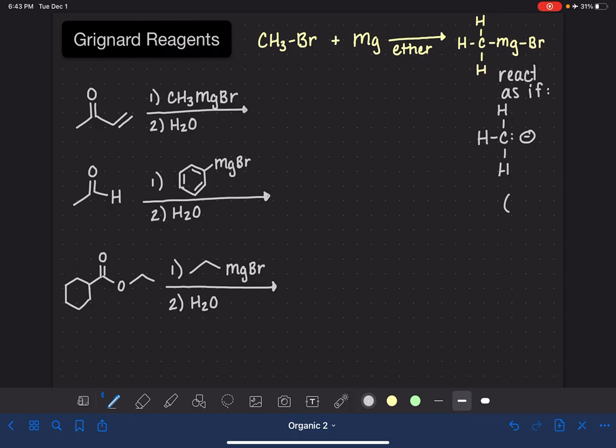They react a lot like a hydride ion, like we have seen in previous videos, lithium-aluminum hydride and sodium borohydride. In this video, I'm going to show you three different examples of Grignard reagents reacting with molecules that have carbon-oxygen double bonds.